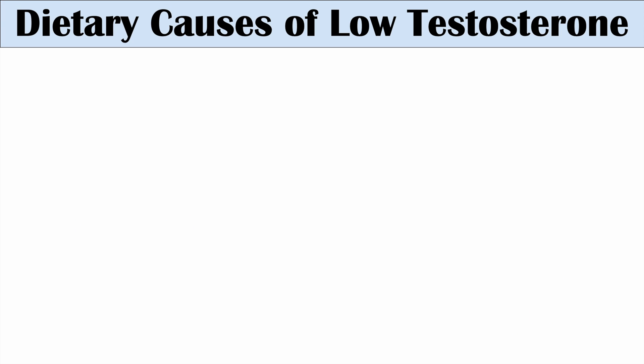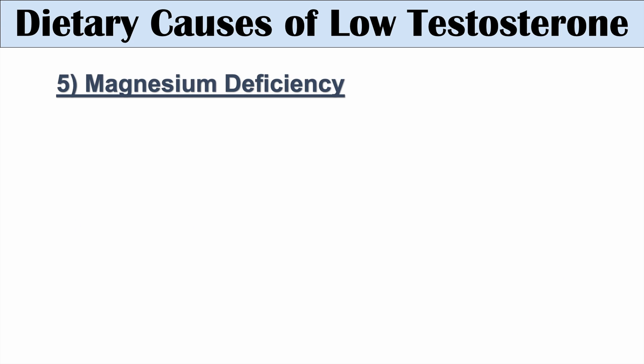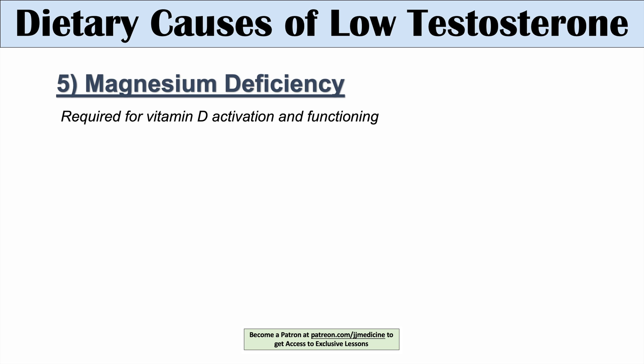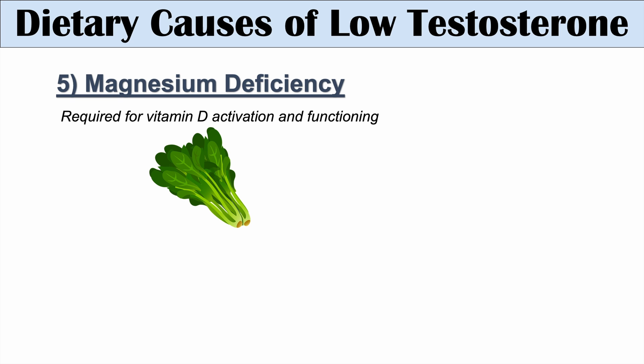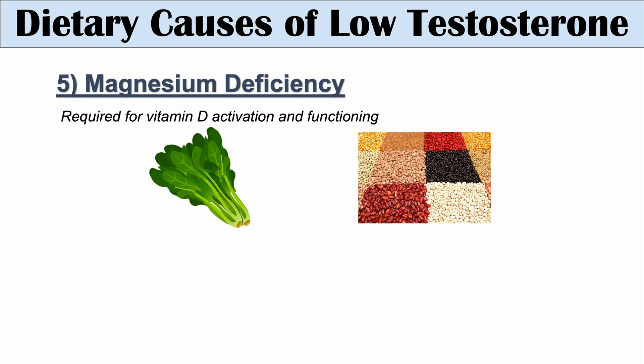The next deficiency associated with a low testosterone level is magnesium deficiency. Magnesium is required for vitamin D activation and functioning, and as we just learned, vitamin D supplementation increases testosterone levels. Magnesium can come from green leafy vegetables and legumes.